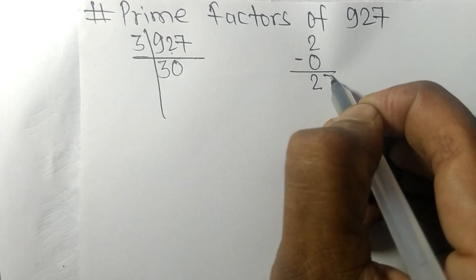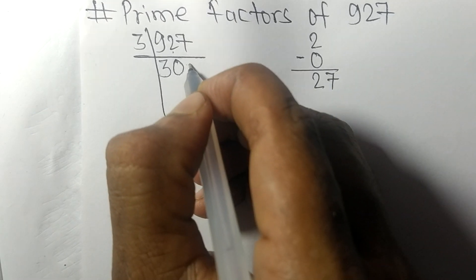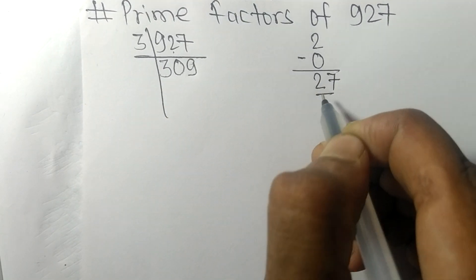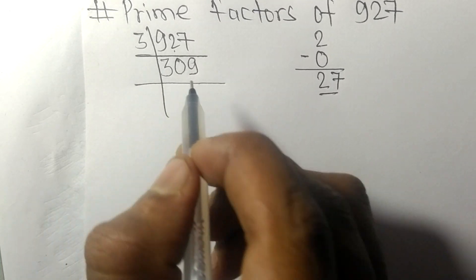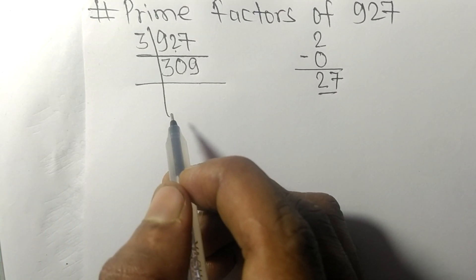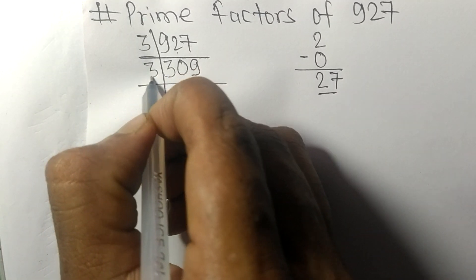2, this 7, 27. 3 times 9 means 27. So now we got 309, which is exactly divisible by 3.